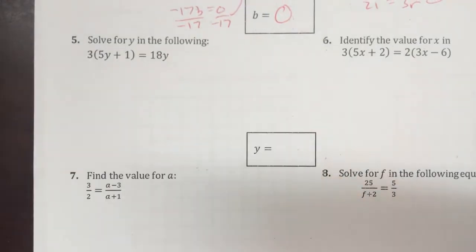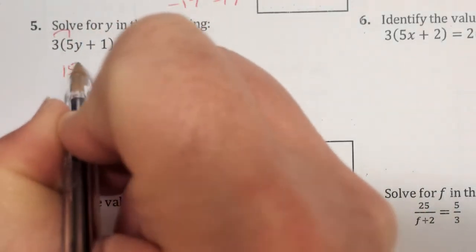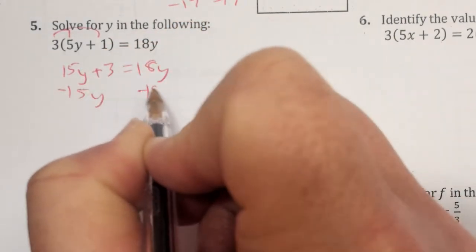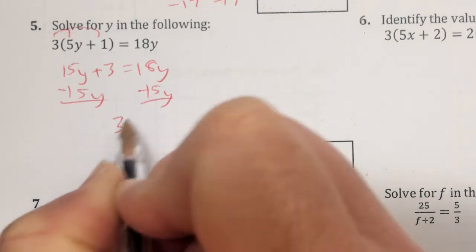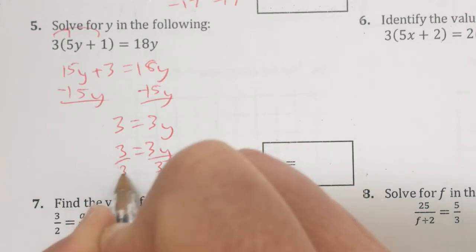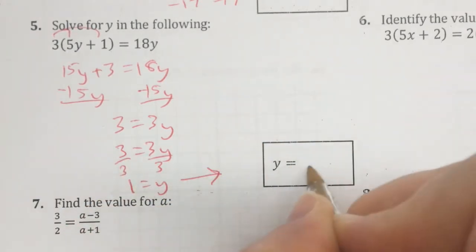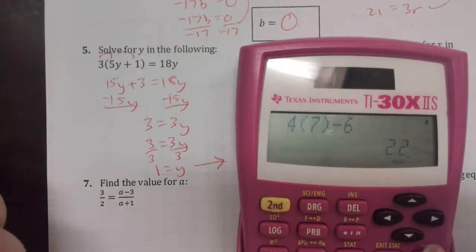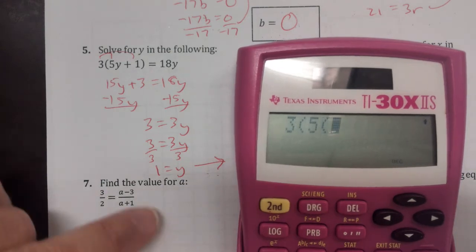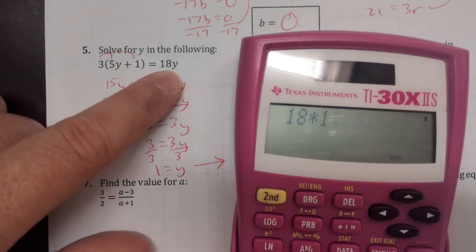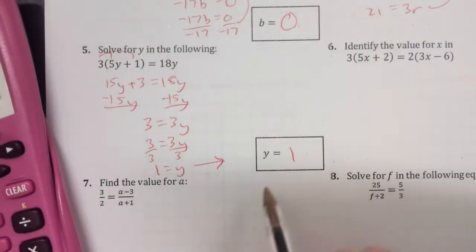Number 5 — we want to distribute. Distributing gives us 15y, and then this plus 3 is equal to 18y. Subtract 15y from both sides and get 3 is equal to 3y. Divide both sides by 3, and y equals 1. Double-checking: 3 times 5 times 1 plus 1 gives 18 on the left side, and 18 times 1 is 18. So this is correct.